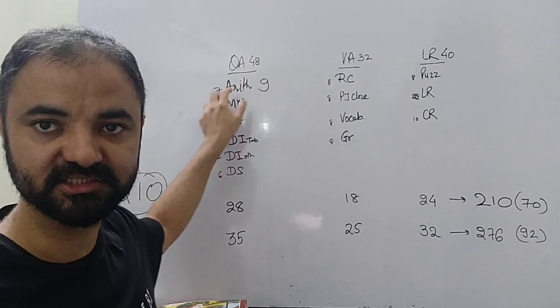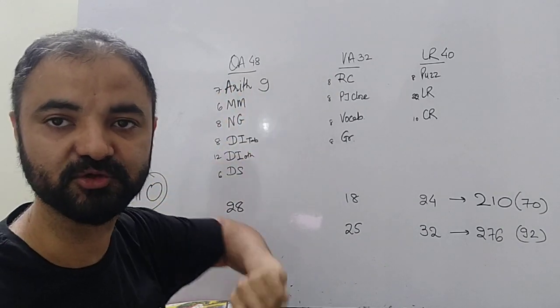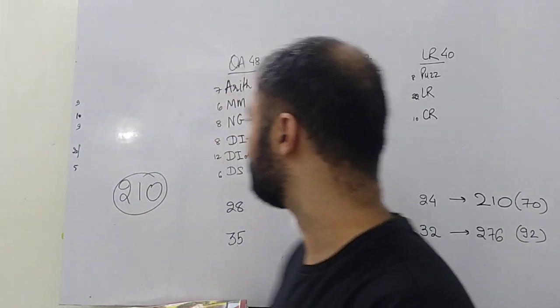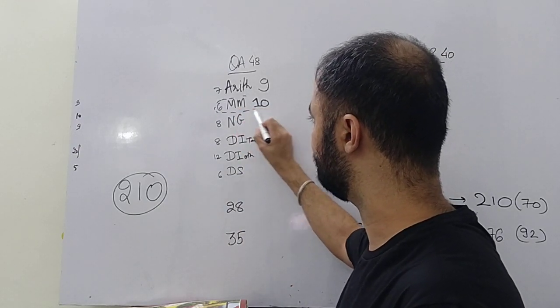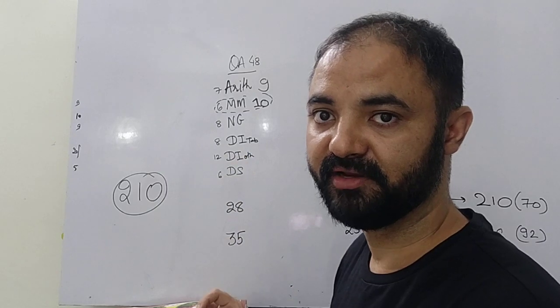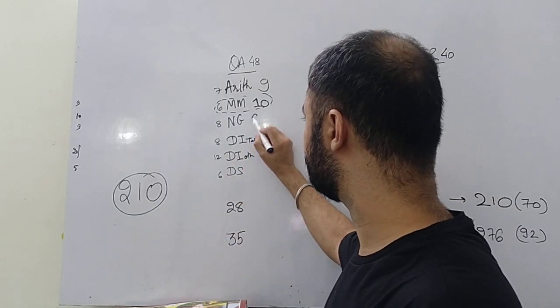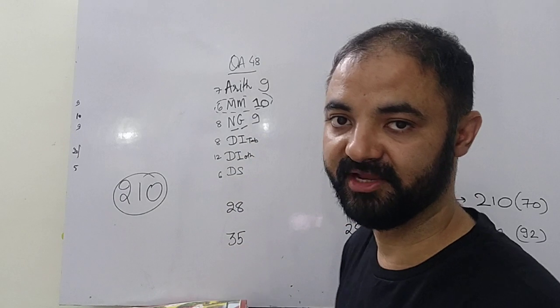First is arithmetic. Arithmetic last year was 7 questions, this time there are 9 questions. Modern maths 10 questions - the number of questions have drastically increased in modern maths. Numbers and geometry were 9 questions - numbers 4, geometry 5.